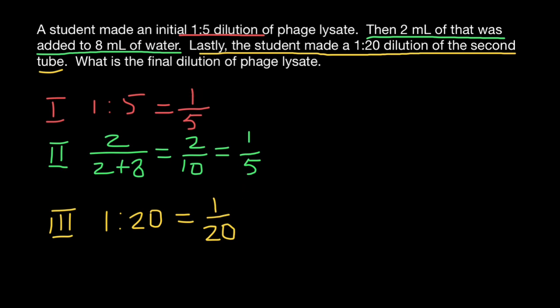So as you see, the student made 3 consecutive dilutions. So now we just have to multiply these dilutions.